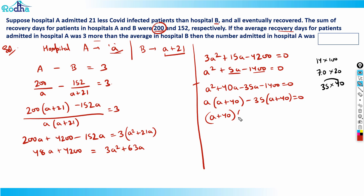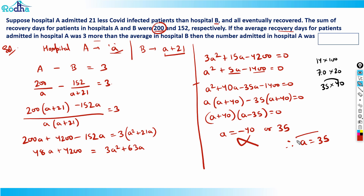The number of COVID patients cannot be negative, so A equals 35. The answer for this question is 35 — the number of patients admitted in hospital A. It's a fairly easy question that can be solved quickly within 2 minutes. A simple question.